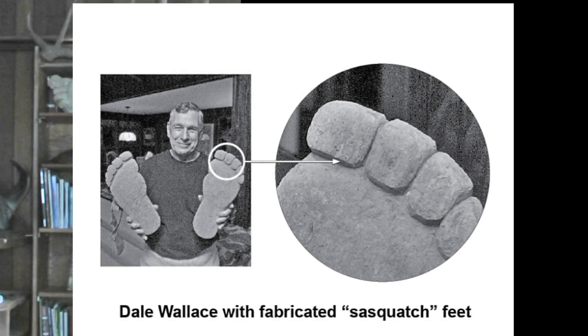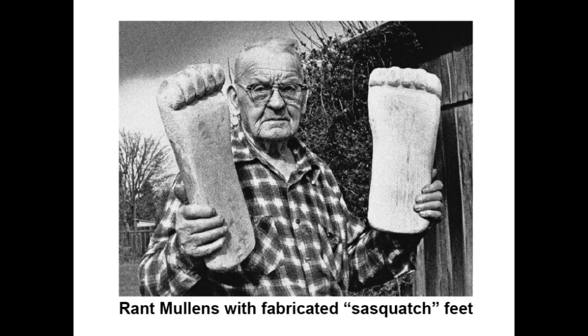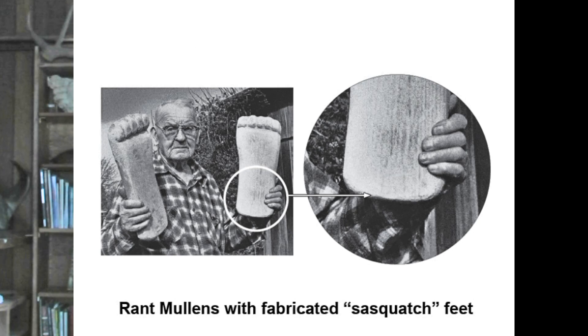Look at the toes more closely — the toes are square. The hoaxer hadn't even bothered to round off the toes. Let's look at another fabricated foot example. This was from 1982 — Grant Mullins brought forward some carved wooden Sasquatch feet. And once again, the heel is square; he hasn't even bothered to round off the heel more than just a little bit. So the question is: Sasquatch scientists who are not stupid have accepted the hoax hypothesis — they regularly tell me that the hoax has explained Sasquatches. But no, hoaxes do not explain Sasquatch tracks, at least not according to the evidence that's been brought forward and was so widely accepted in 2002.